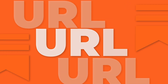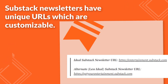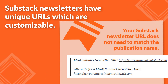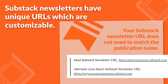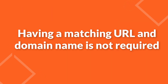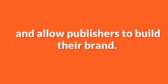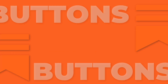Moving on to tip number 2: URL. Substack newsletters have unique URLs which are customizable. Notably, your Substack newsletter URL does not need to match the publication name. That said, you should try to have a matching URL and publication name. Having a matching URL and domain name is not required, but it can help readers recognize your publication and allow publishers to build their brand.